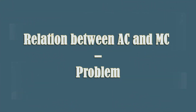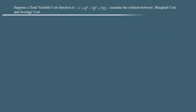In this tutorial, we shall examine the three relations between average cost and marginal cost using a problem. The problem is: suppose a total variable cost function is c = q³ − 3q² + 15q. Examine the relation between marginal cost and average cost.